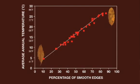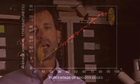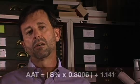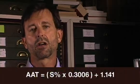When we want to figure out the temperature of a fossil assemblage, we again calculate the percent of species that have those smooth edges on their leaves, and we put that number into the equation that describes the line.